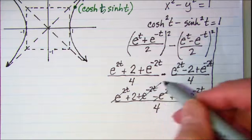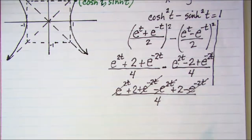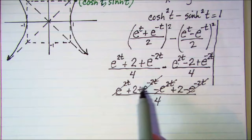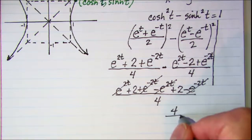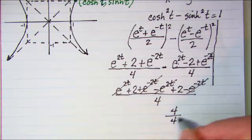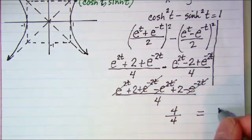So all I have left in the numerator is 2 plus 2 which is 4. And then my denominator is 4. So this is equal to 1. So we've proven that this hyperbolic trig identity is true.